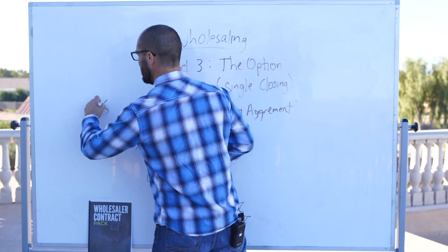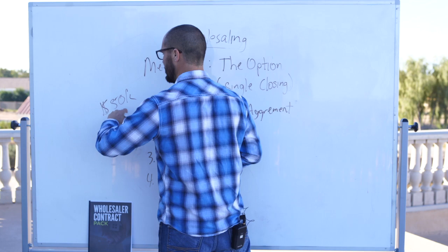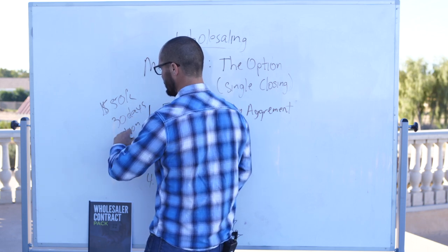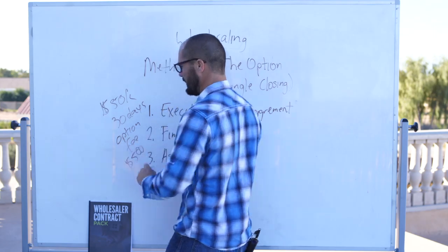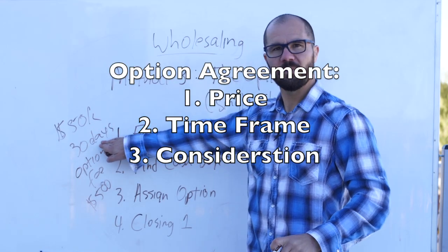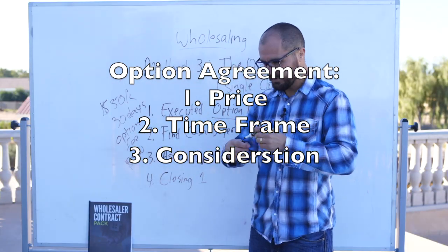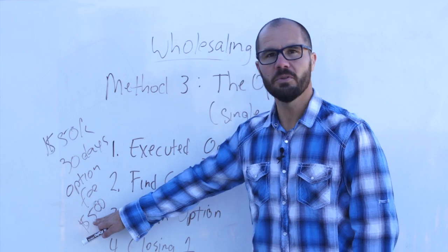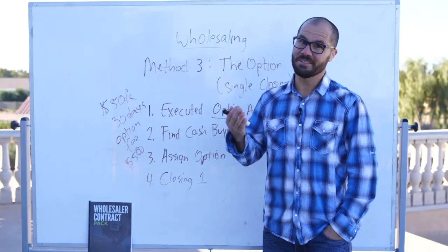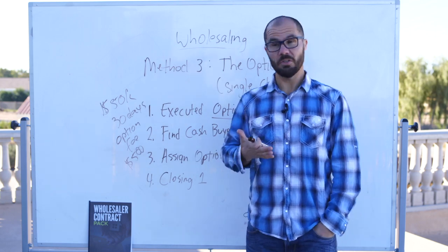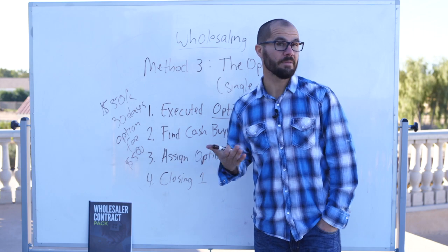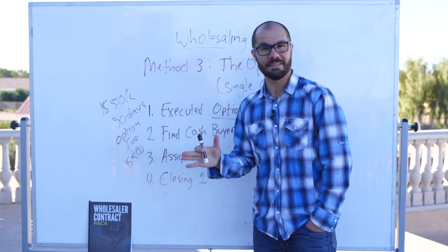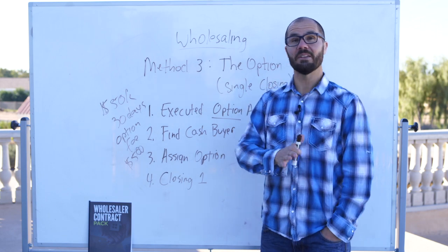For example, let's say that I get an option for $50,000 and my option agreement is for 30 days. So you have to have a price, you have to have a time frame, and the third thing is you have to have an option fee — there has to be consideration. Let's say that I pay $500 as an option fee. So I have a price of $50,000, a time frame of 30 days, and an option fee of $500. What that means is if I don't buy the house in 30 days for $50,000, then I forfeit my $500 option fee. That's the downside — you will lose your option fee. You can set that option fee to whatever you agree on with the seller: could be a dollar, could be $1,000, could be $10,000.